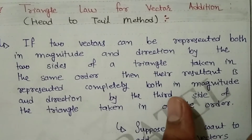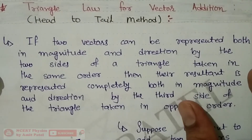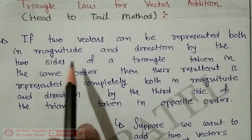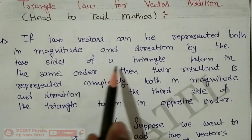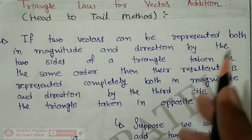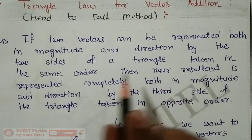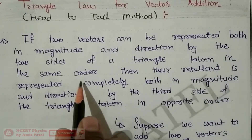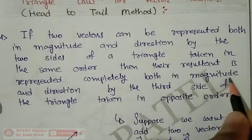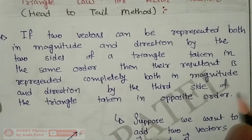Triangle Law of Vector Addition — we also call it the Head-to-Tail Method of Vector Addition. Let's look at the statement: If two vectors can be represented both in magnitude and direction by two sides of a triangle taken in the same order, then the resultant is represented completely — both in magnitude and direction — by the third side of the triangle taken in the opposite order.